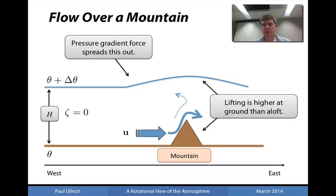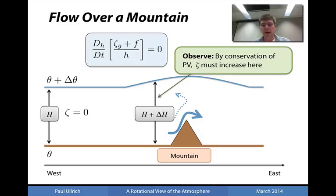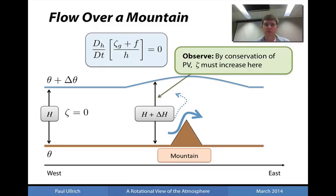This basically represents the confines of our fluid column as it passes over the mountain. Notice that the height of the fluid column increases slightly before it actually reaches the mountain itself. And so by conservation of potential vorticity, if the denominator increases and the planetary vorticity is constant — that is, we see no variation in the latitude associated with the fluid column — then it must follow that the relative vorticity of the fluid column must increase.